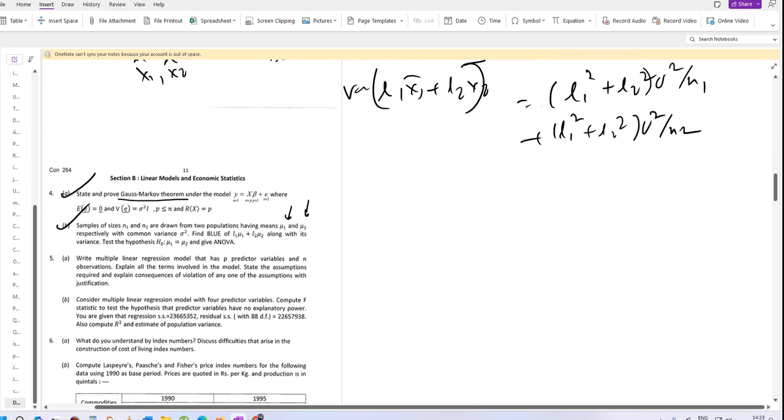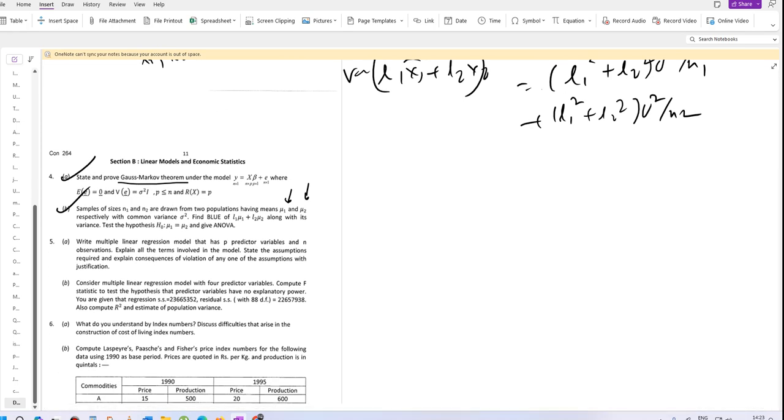The test of hypothesis with respect to H0: mu 1 equal to mu 2. H0 is common mean that is mu. The ANOVA table will be like this.